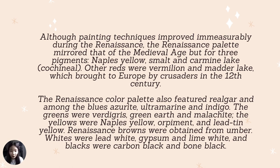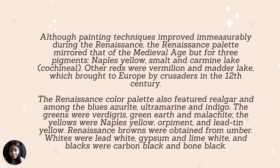The renaissance color palette also featured realgar, and among the blues: azurite, ultramarine, and indigo. The greens were verdigris, green earth, and malachite. The yellows were Naples yellow, orpiment, and lead-tin yellow. Renaissance browns were obtained from umber. Whites were lead white, gypsum, and lime white. Blacks were carbon black and bone black.